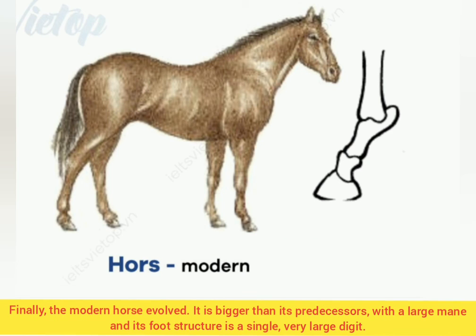Finally, the modern horse evolved, as pictured, with a large mane and its foot structure reduced to a single, very large digit.